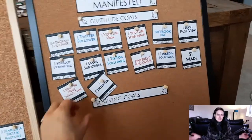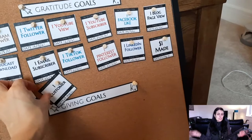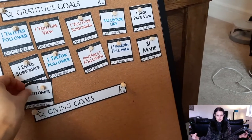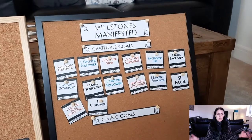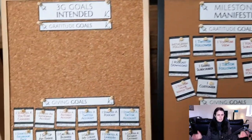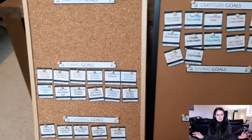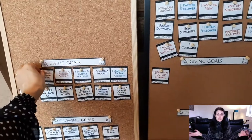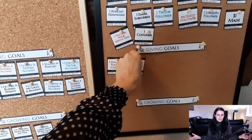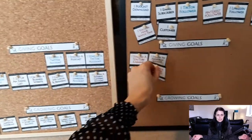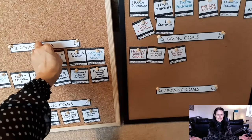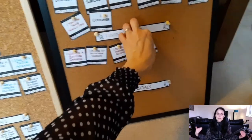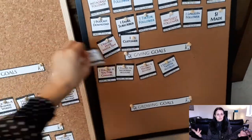Let's start by looking at the difference between a manifestation milestones board and a vision board. A vision board is usually made up of mostly images — things that you want to manifest in the future, such as a bigger house, traveling around the world, a new partner, etc. It's great for things that are very visual in nature. The purpose of a vision board is to feel feelings of gratitude when you look at those images, because gratitude brings your vision into reality.